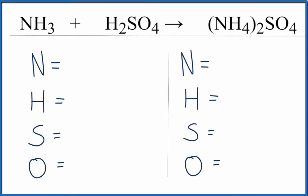We have one nitrogen, three hydrogens, and these two hydrogens here we need to add those in. So we have five hydrogen atoms, one sulfur, and four oxygens.